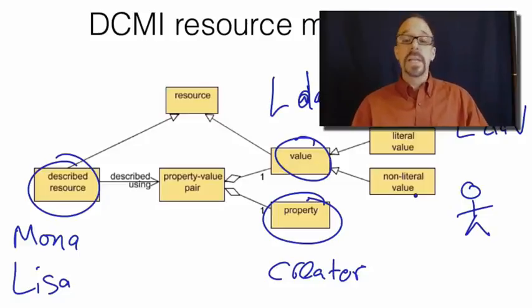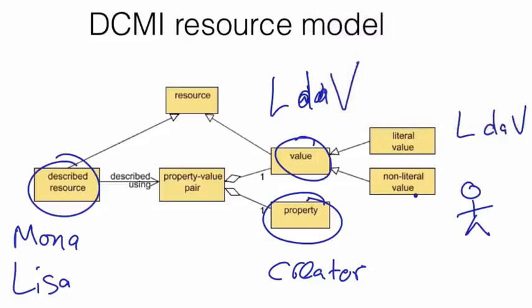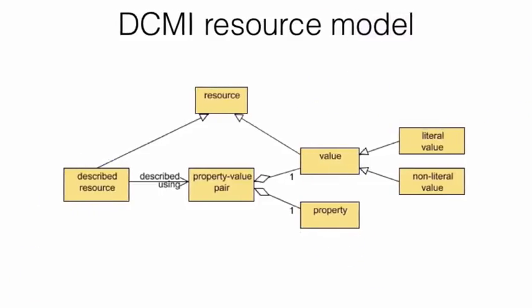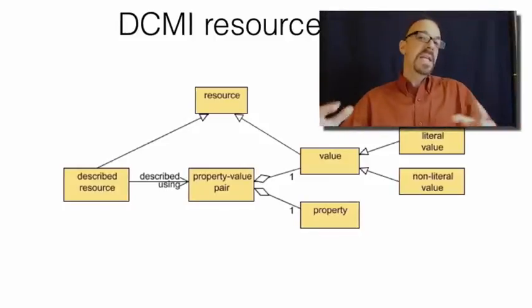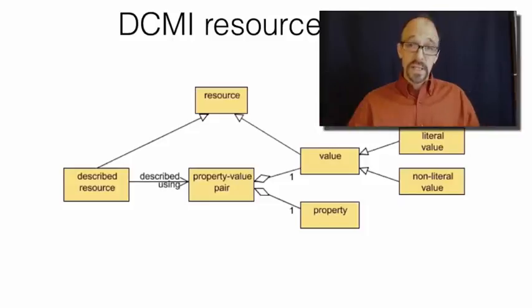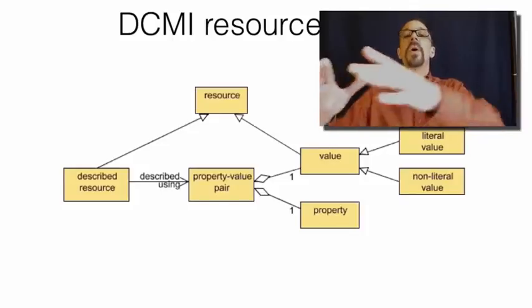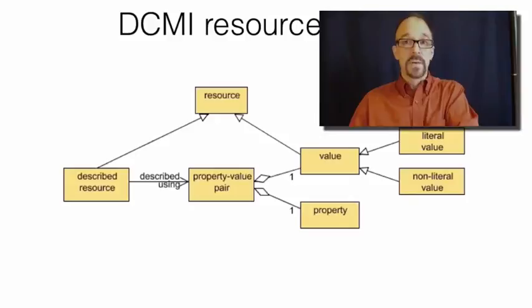So the Mona Lisa is a resource, but so is Leonardo da Vinci, because both are things in the world. So what this diagram is telling us is that a thing that exists in the real world, a resource, can be described using properties and values. And those values also correspond to things in the real world.